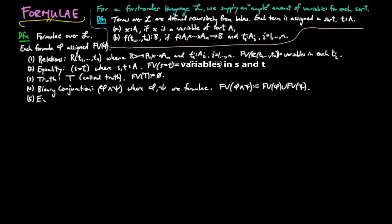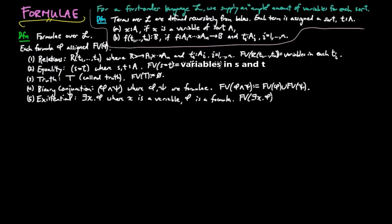Five, existential quantification: there exists X such that phi, where X is a variable and phi is a formula, and the free variables of (∃X. phi) is equal to the free variables of phi with the variable X removed.